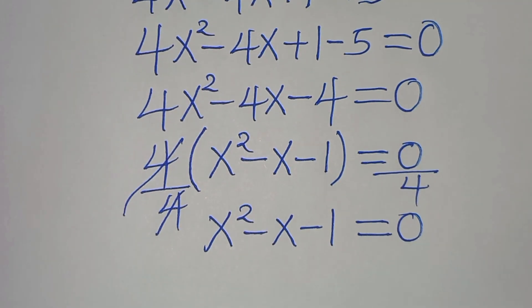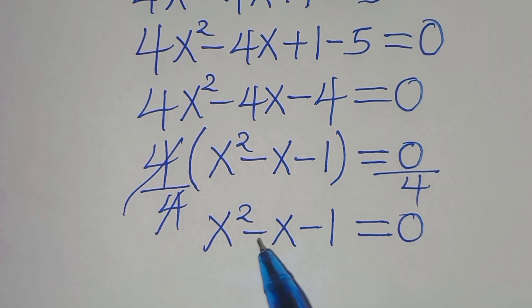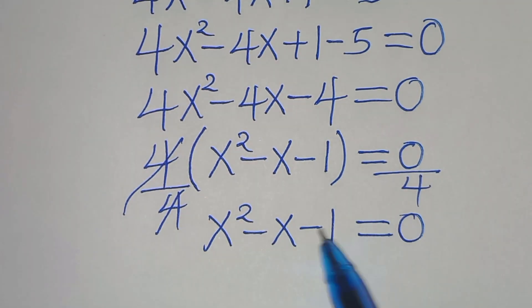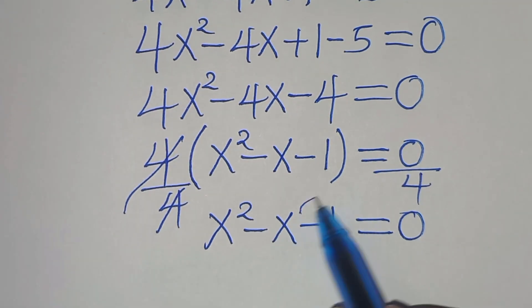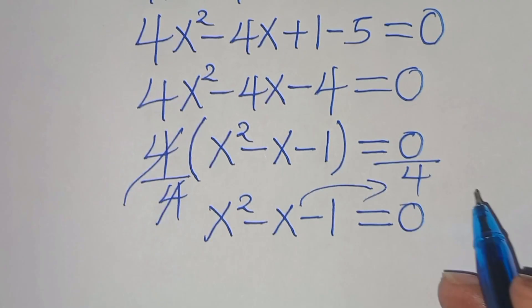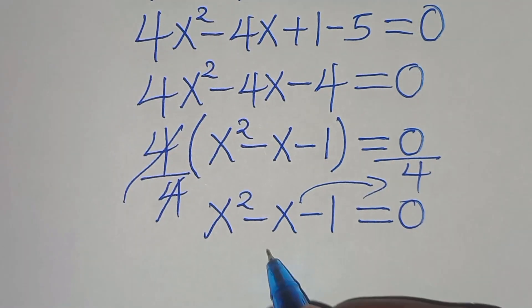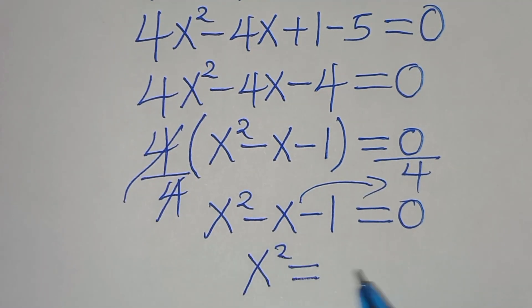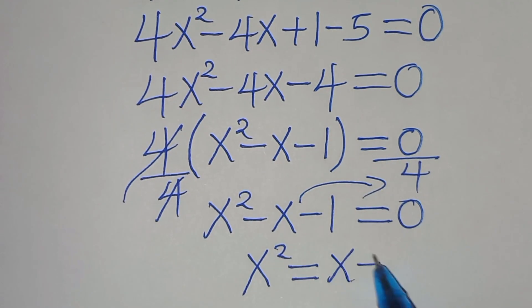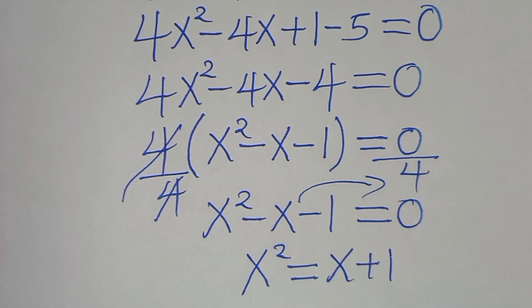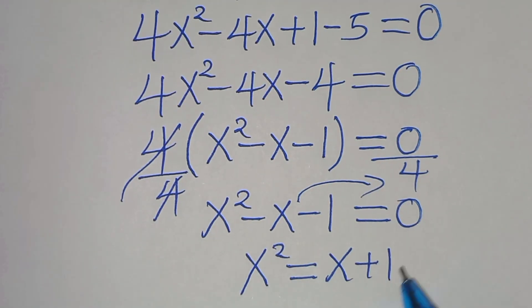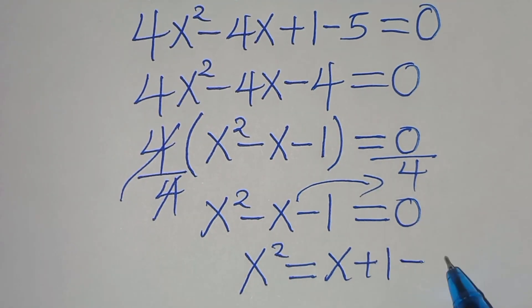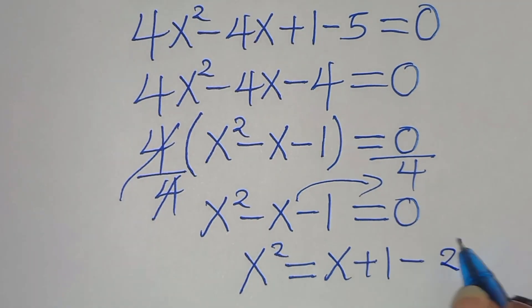The next step is to take minus x minus 1 on the right hand side, so that we have x squared equals x plus 1. Let's call this equation 2.